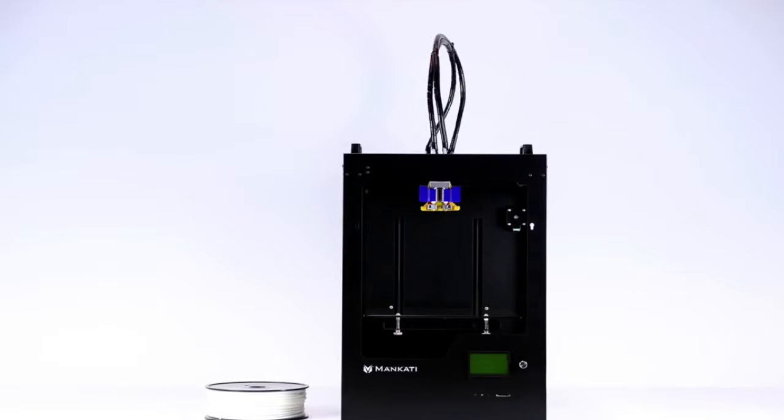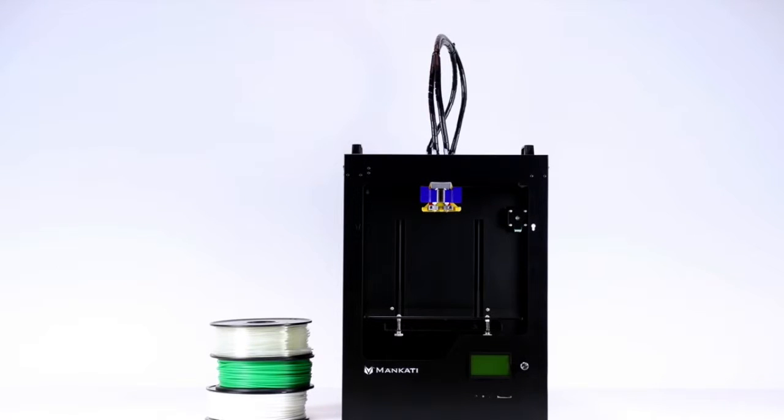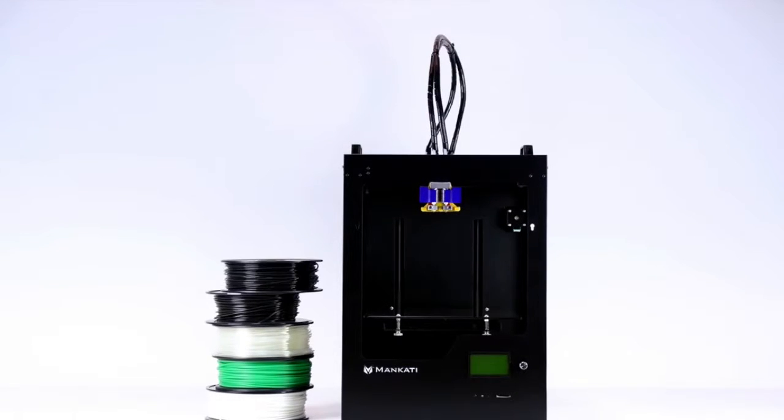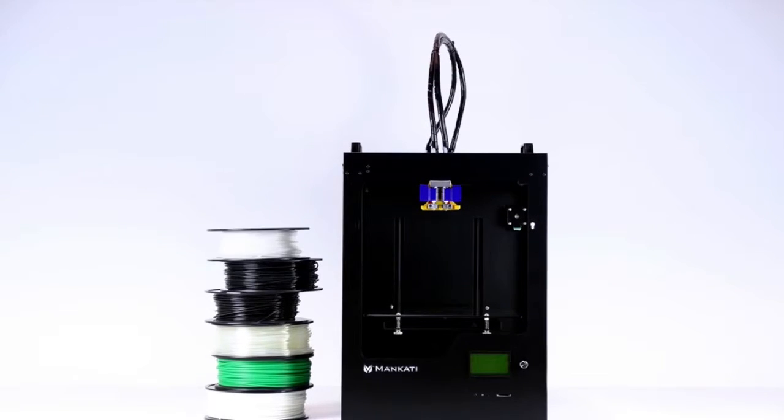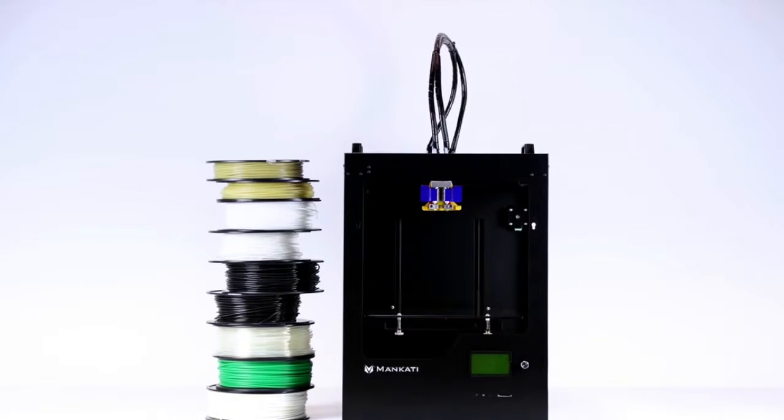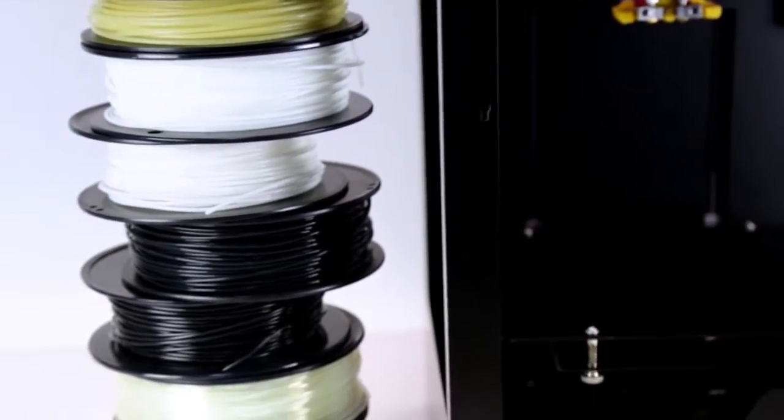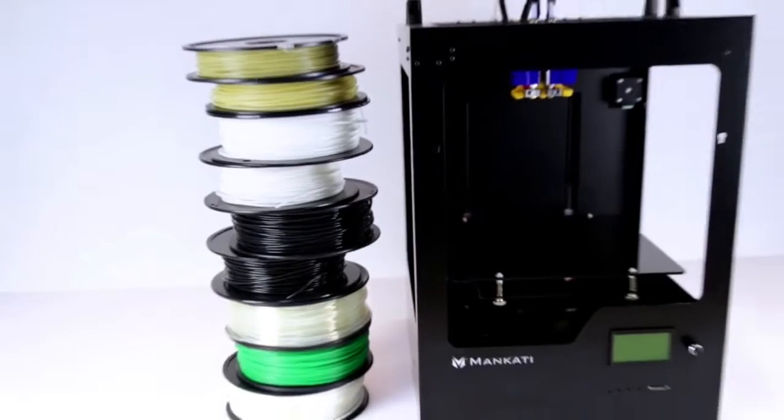For instance, commonly used filaments include ABS, PLA, Nylon, Laywood, Laybrick, T-Glass, and PC. As it has dual extruders, you can also use support material like PVA and HIPS. One more thing, Fourscale XT Plus is compatible with other third-party 3mm filaments.